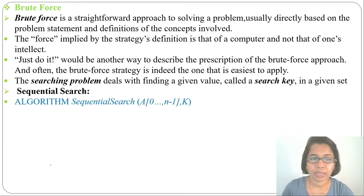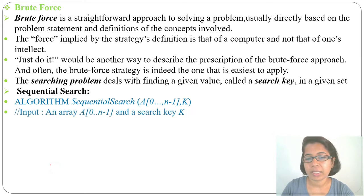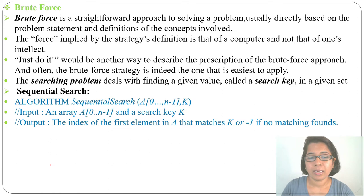Let's discuss Sequential Search Algorithm. Algorithm Sequential Search A[0 to n-1], k. 0 to n-1 are the index. What is input? Input is the array and a search key. Output? Output will be the index of the first element of A that matches k, or the search key, and minus 1 if no matching found. So, index of the search key if matching found, if no matching found, then it will return minus 1.